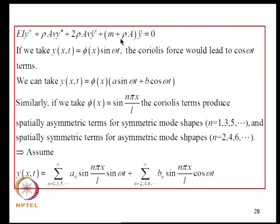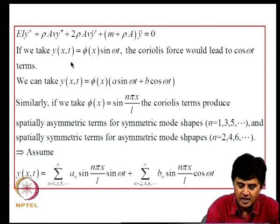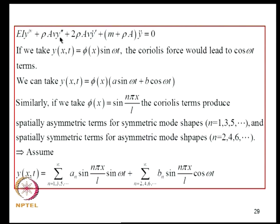We want to construct a solution to estimate natural frequency and how it depends on flow velocity, and examine stability-related issues. If we take Y(X,T) = phi(X)·(A·sin(omega·T) + B·cos(omega·T)), the mixed derivative Y-dot' produces cosine spatial terms when phi(X) = sin(nπX/L). Taking phi(X) as a pure sine leads to coupling between symmetric and asymmetric mode shapes, making the solution difficult to handle directly.